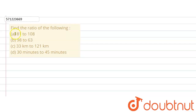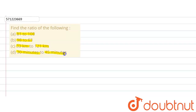The given question says: find the ratio of the following — 81 to 108, 98 to 63, 33 km to 121 km, and 30 minutes to 45 minutes.